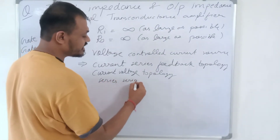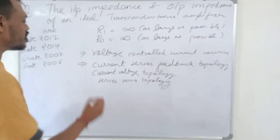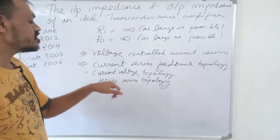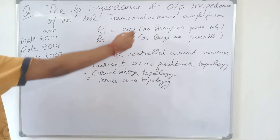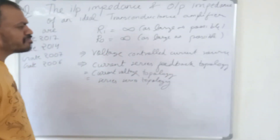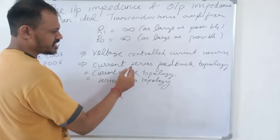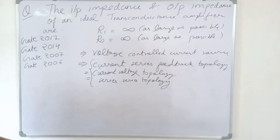It is also referred to as Series Sampling, Series Mixing. These are all names of the same topology. So the Transconductance Amplifier must have infinite input impedance and infinite output impedance. It is also called a Voltage Controlled Current Source, and its feedback topology — Current Series, Current-Voltage, or Series-Series — are all names for the same thing.